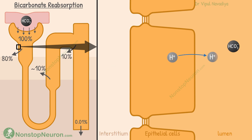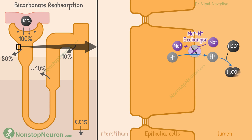The trick starts with the secretion of hydrogen into the lumen. In the proximal tubule, this occurs mainly by the sodium-hydrogen exchanger. Inside the lumen, the hydrogen ion reacts with the bicarbonate ion and forms carbonic acid. This molecule then dissociates into CO2 and H2O.